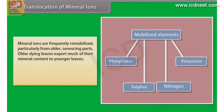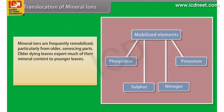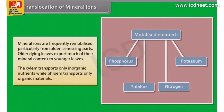Elements most readily mobilized are phosphorus, sulfur, nitrogen, and potassium. Some elements that are structural components, like calcium, are not remobilized. The xylem transports only inorganic nutrients, while phloem transports only organic materials.